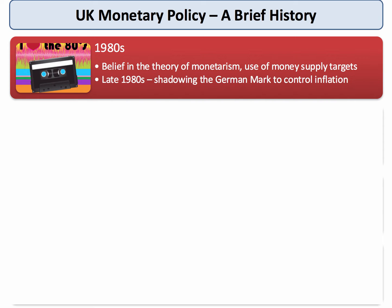In the late 1980s, a narrow belief in controlling the money supply gave way to an emphasis on controlling the exchange rate as a way of keeping inflation in check. Indeed, in the late 1980s the British government started to shadow the German Deutschmark, which at the time was Europe's largest economy and also the lowest inflation economy.